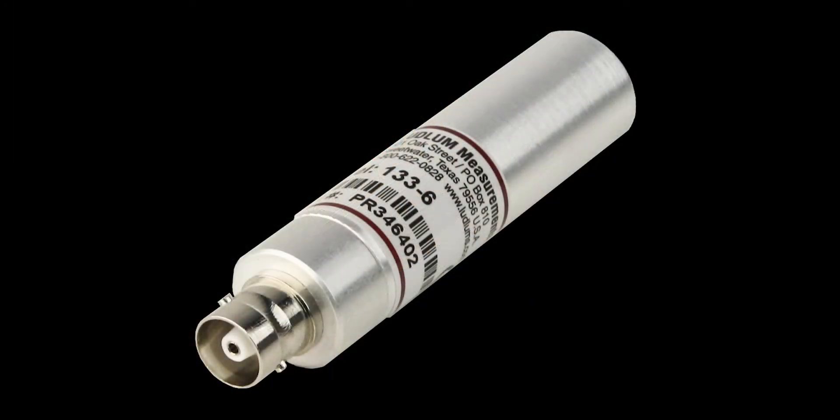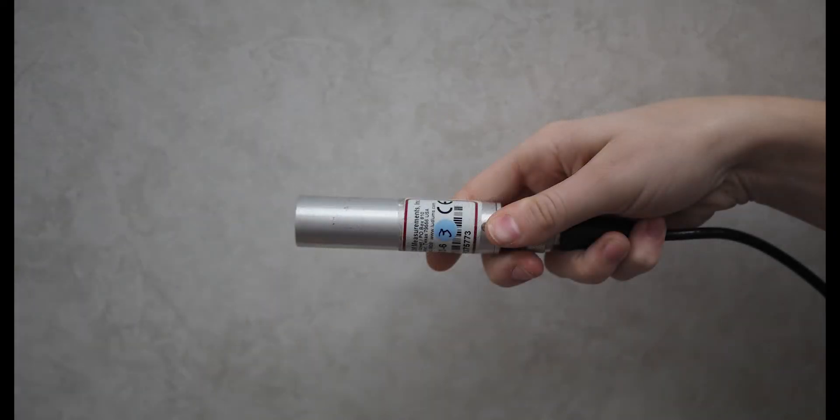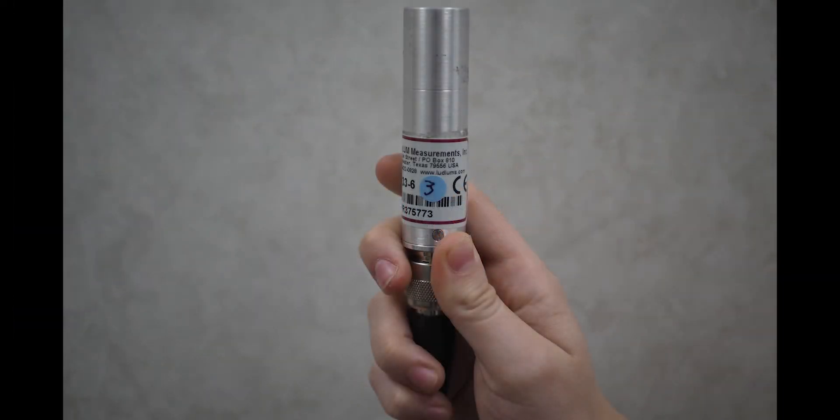Detector number 3 is the model 133-6 and it reads in R per hour. It can be held either pointed at the suspected source of radiation or it can be held sideways.